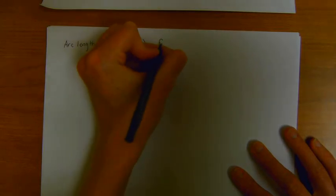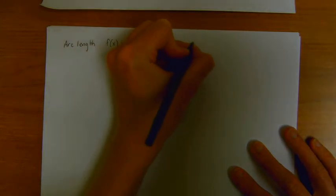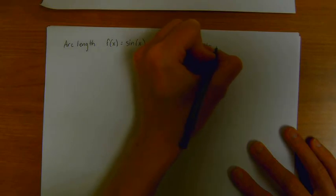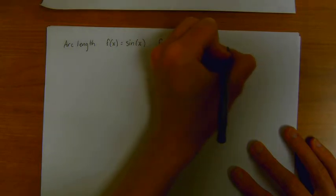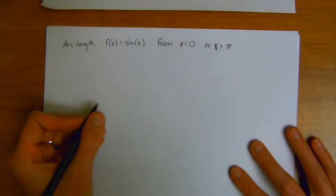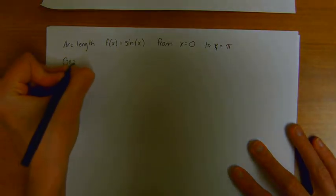From x equals 0 to x equals pi. And GeoGebra has a nice feature to be able to compute this.